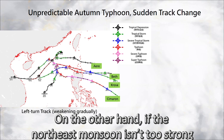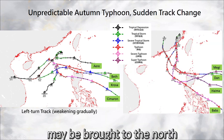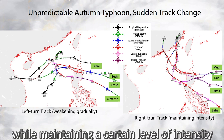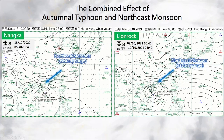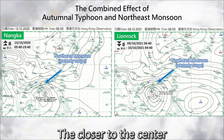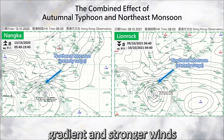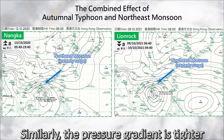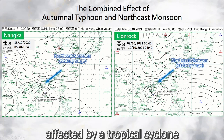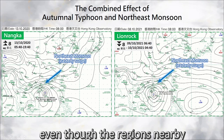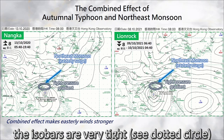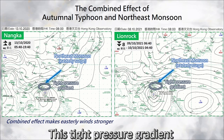On the other hand, if the northeast monsoon isn't too strong, the tropical cyclone may be brought to the north by the westerly trough associated with the monsoon and move towards the coast of southern China while maintaining a certain level of intensity. On the weather chart, we can see many closed isobars surrounding the tropical cyclone — the closer to the center, the more closely packed the isobars, meaning a tighter pressure gradient and stronger winds. Similarly, the pressure gradient is tighter in regions affected by the northeast monsoon. When a location is simultaneously affected by a tropical cyclone and the northeast monsoon, even though nearby regions are far away from the center of the tropical cyclone, the isobars are very tight, leading to stronger winds.